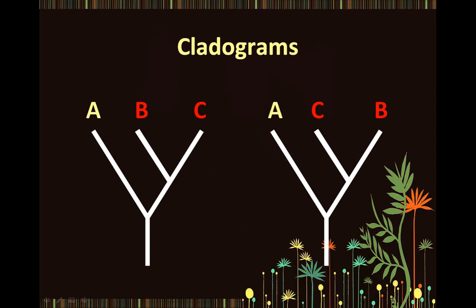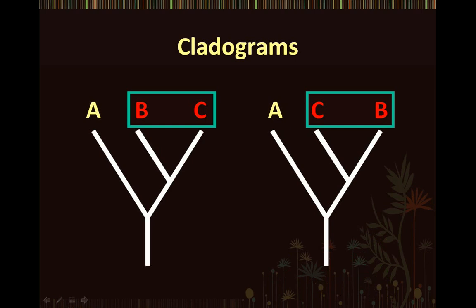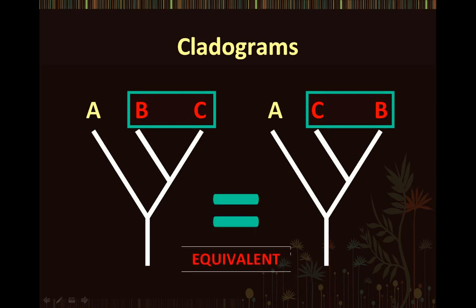So remember this: A is as closely related to B as it is to C. Therefore, if we are looking at both of these phylogenetic trees, we will see that they are both equivalent, regardless of the arrangement of the letters B and C. Even though the branches may rotate, the underlying branching relationships do not change.